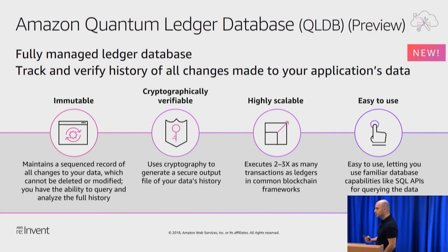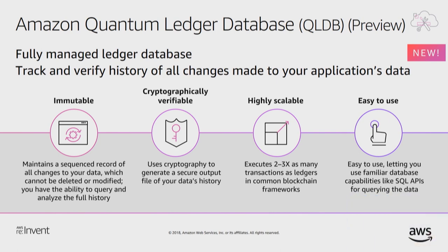Some of the core concepts of QLDB: first, it's immutable — it cannot be changed. Everything that takes place is recorded. The APIs themselves don't allow you to modify or delete data in your journal. It's also cryptographically verifiable, meaning every transaction stored within the database has a mathematical hash associated to it — a SHA-256 algorithm — that you can digest and verify that not one thing has been modified. You can compare the hash values and know that even we at AWS have no ability to change that.